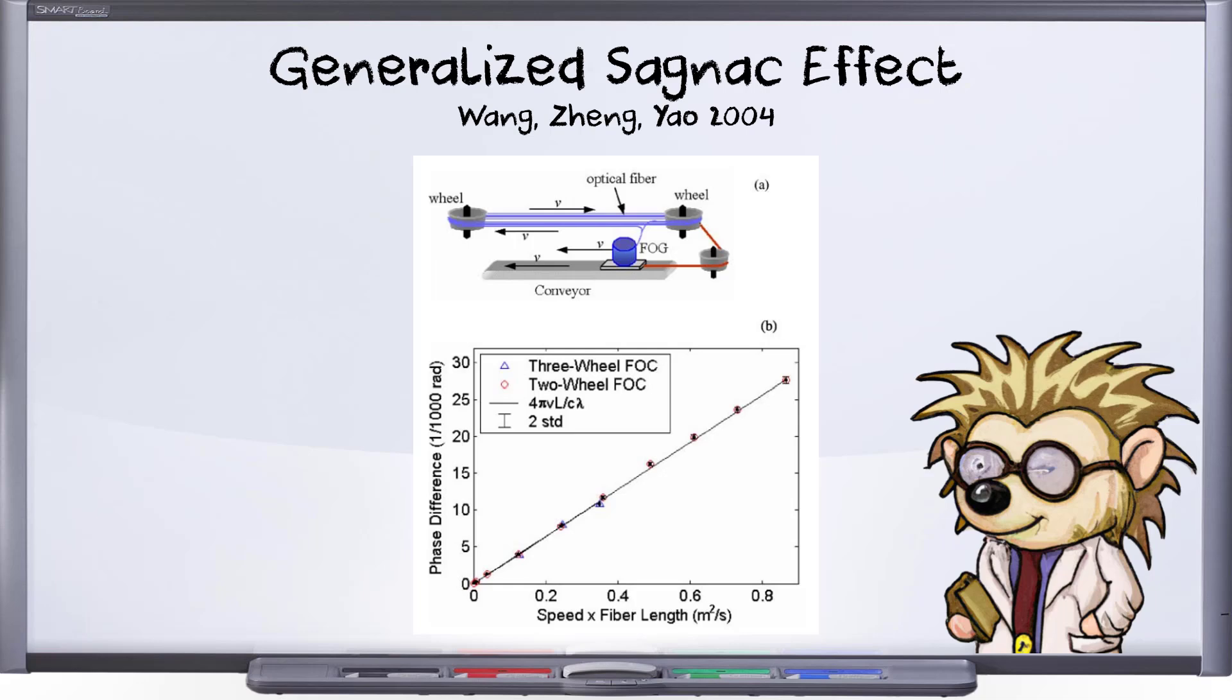We will have one beam of light going around counterclockwise and another beam going clockwise. You will also notice the fiber optic gyro is in a conveyor of some kind and is being pushed to the left, and I'll keep that consistent in all of my diagrams: the fiber optic gyroscope is moving to the left.